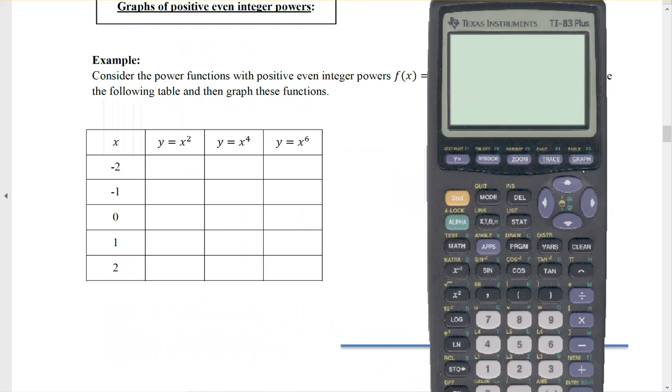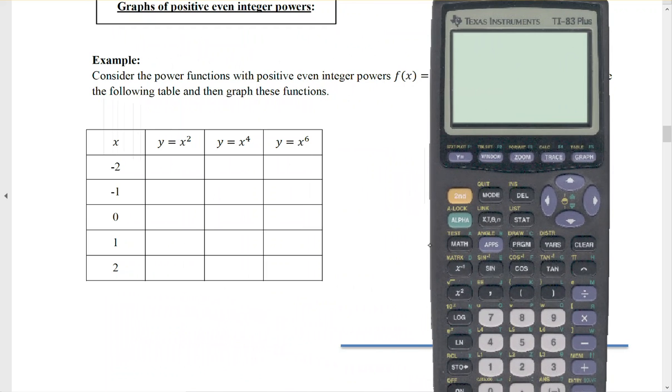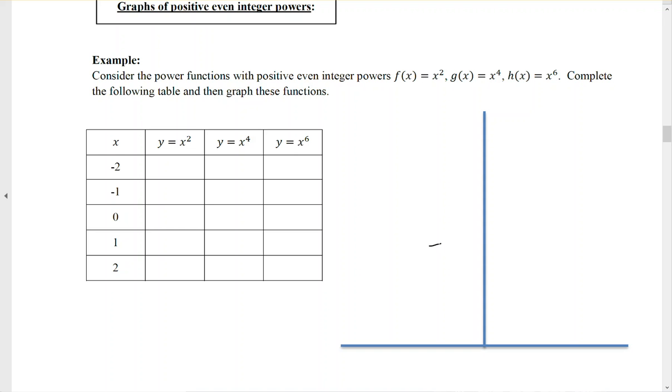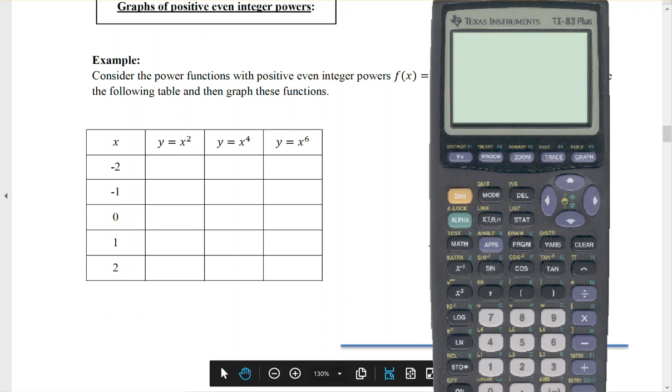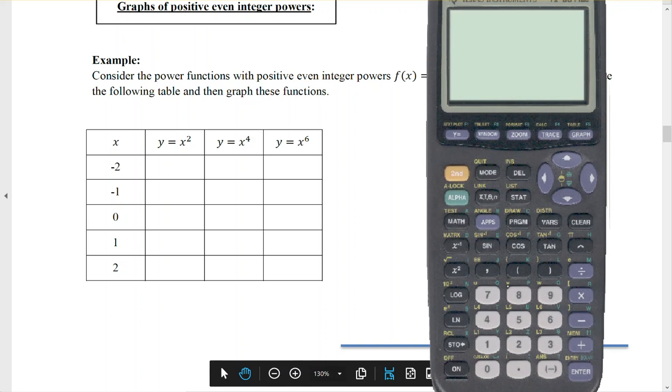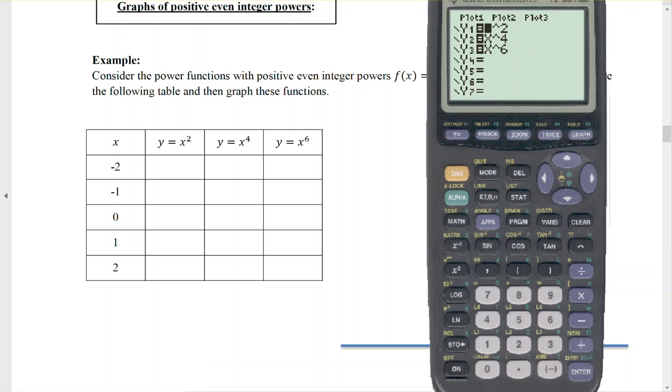Let me bring it down to where we can see it a little bit better. What I'm going to do is go in, clear out all my junk here, and type in those three functions: x to the 2, x to the 4, and x to the 6, remembering that the x key is right here.